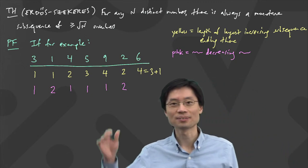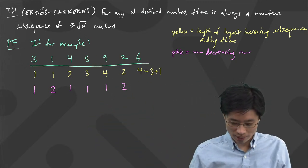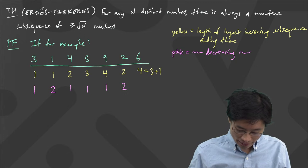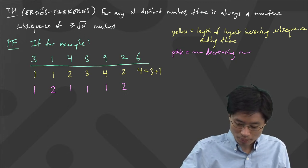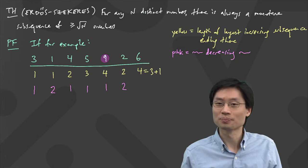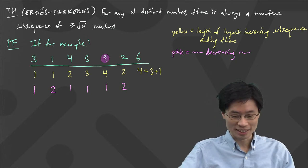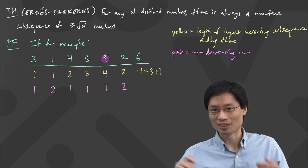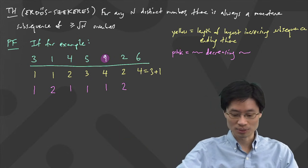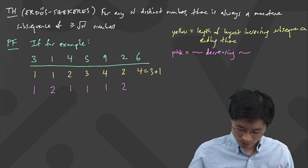And for the six, what's the longest decreasing that ends at the six? Let's find the numbers bigger than six — oh, there's only one. Then you take the number under it, which is one, plus one, and that gives you two.